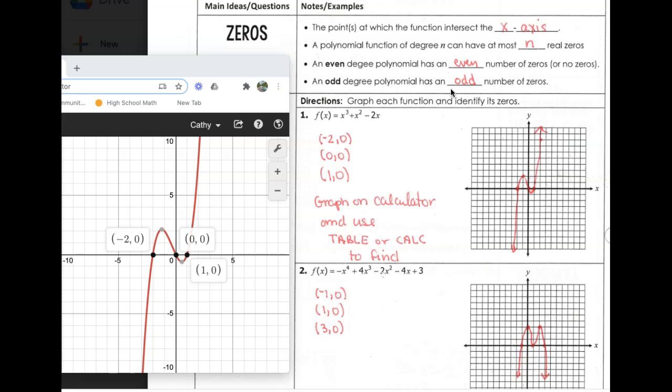Let's graph some of these and identify the zeros graphically. If I graph x cubed plus x squared minus 2x on Desmos over here and hover over the points where this function crosses the x-axis, I can see they are at (-2, 0), (0, 0), and (1, 0). So the zeros of this function are -2, 0, and 1.